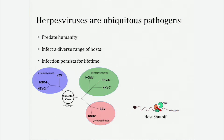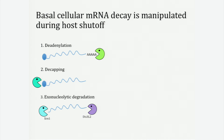How does host shutoff work? Let's take a step back. In a normal cellular environment, mRNAs are protected from degradation through the basal cellular mRNA decay pathway, where mRNAs are synthesized with a 5' cap structure and a 3' poly-A tail. At the end of the translational life of mRNAs, they don't become degraded until the very slow initial step of deadenylation — the rate-limiting step of the basal decay pathway. Once this finishes, it recruits mRNA decapping factors to remove the 5' cap structure.